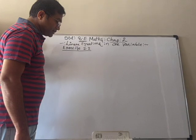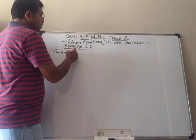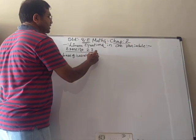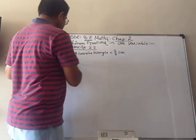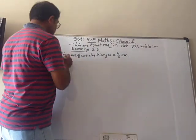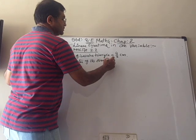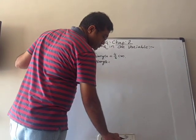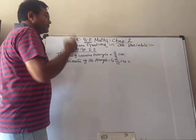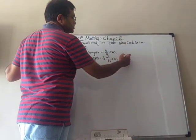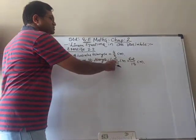Now we take question 3, in which the base of an isosceles triangle is given as 4/3 cm, and the perimeter of the triangle is given as 4 and 2/15. We convert it to improper fraction: 15 fours are 60, plus 2 is 62, so the perimeter is 62/15 cm.